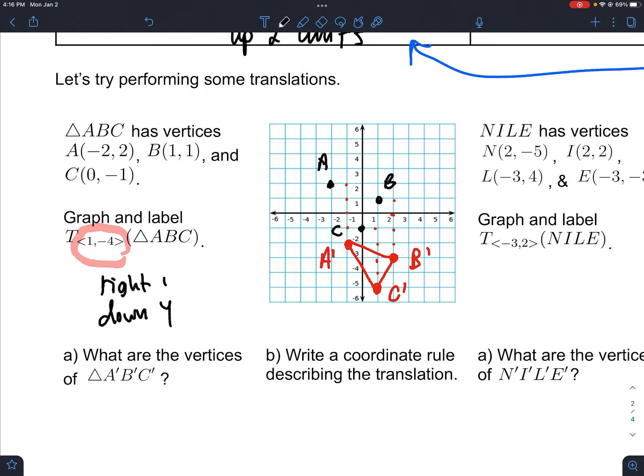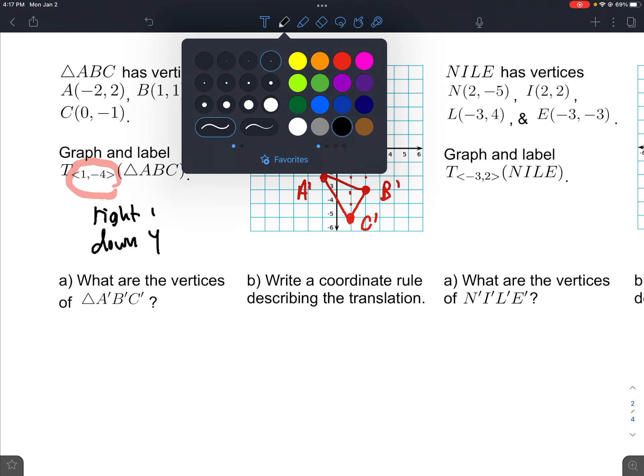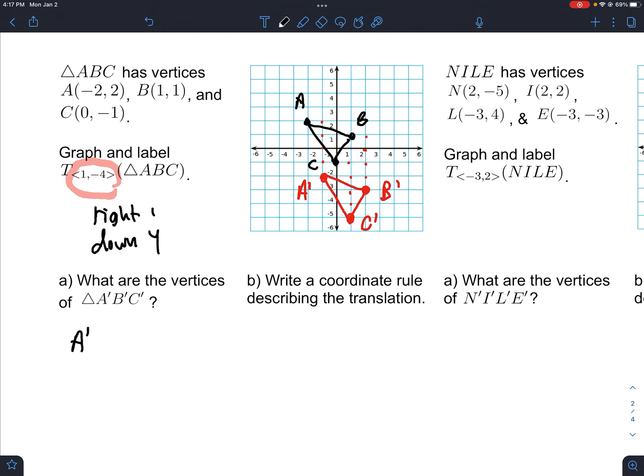If you have two colors or a pencil and a pen, it's good to use both of those here. The new vertices are A prime, which is negative 1, negative 2. B prime ended up being 2, negative 3, and C prime ended up being 1, negative 5. The coordinate rule would be - we go right 1, so x has to be increased by 1, and y has to be decreased by 4.